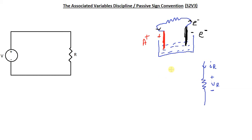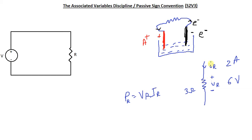We know from physics that a resistor will always dissipate power — it will never supply power. Let's calculate the power across the resistor. Say the voltage is 6 volts and the current is 2 amps, making this a 3-ohm resistor. Power equals voltage times current: 6 times 2 equals 12 watts. Notice this is a positive number, and this power is dissipated power.